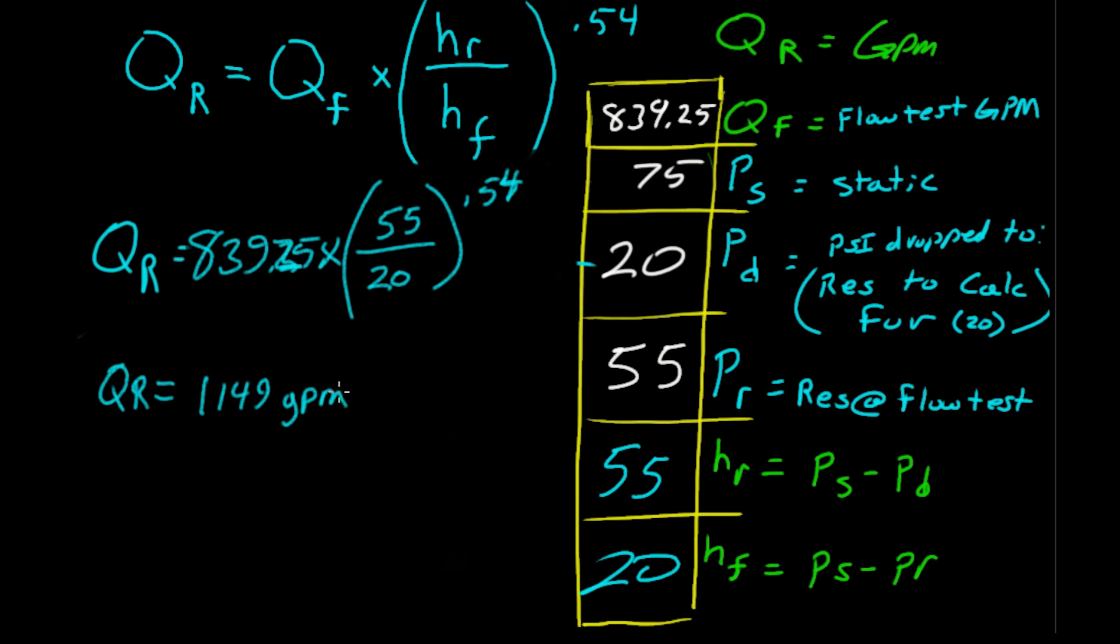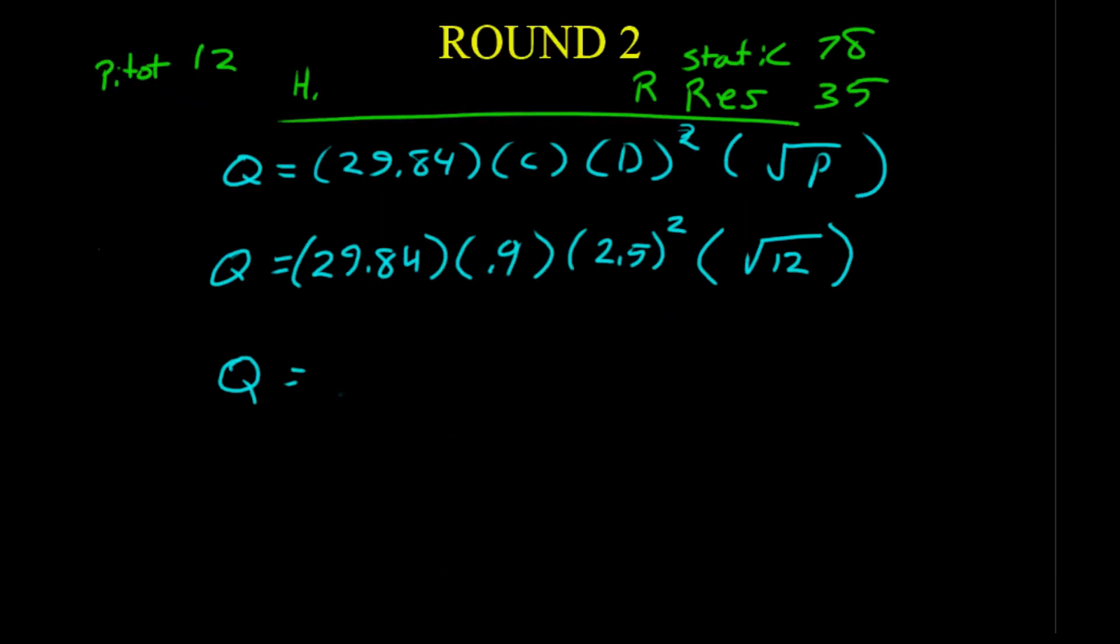Let's see if you can get that answer. So, your gallons per minute, 1,149 gallons per minute. And that's rounded too. Now, let's go round two.